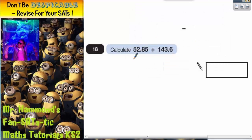Question 18. Calculate 52.85 plus 143.6. Now what we're definitely not going to do here is try and do this in our heads. It's going to be an addition column method.